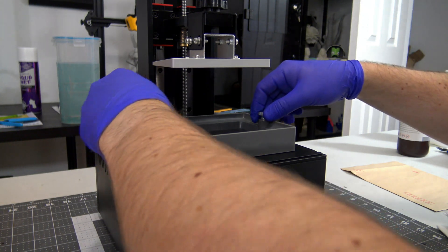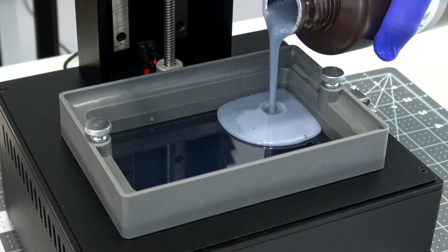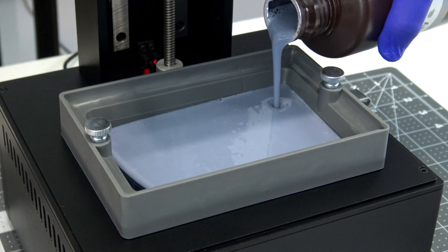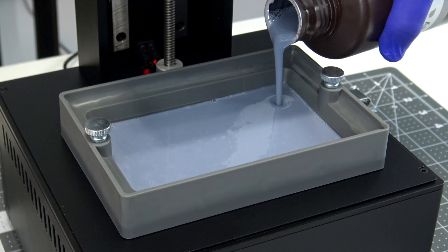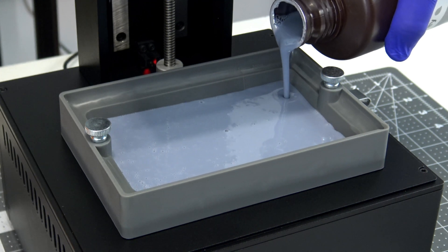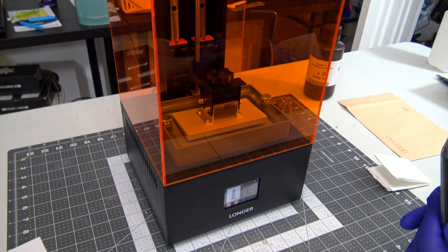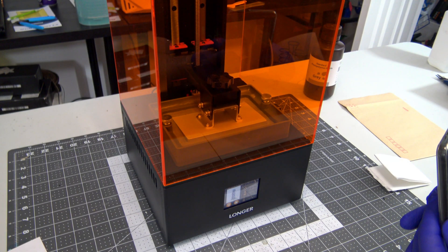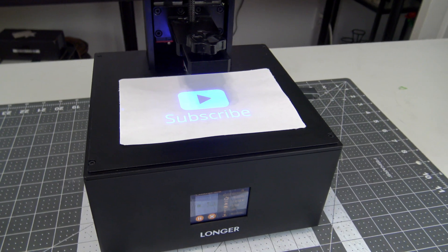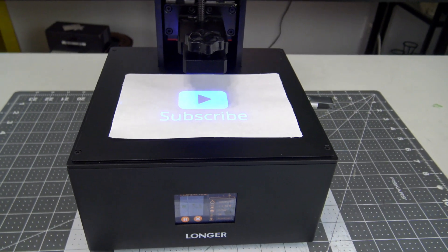Longer does not include any resin with the printer, so you will need to purchase a bottle of resin separately before you can start to print. I have a feeling that might catch a few customers off guard, so be sure to buy some resin. While you're out, be sure to have plenty of nitrile gloves, isopropyl alcohol, and paper towels on hand. With resin printing, you'll need it. And be sure to subscribe to see an upcoming video on how I wash and cure my resin prints.